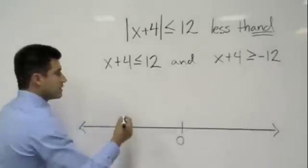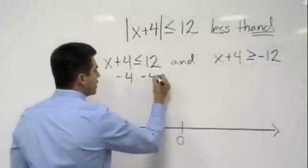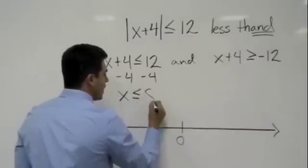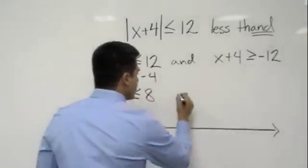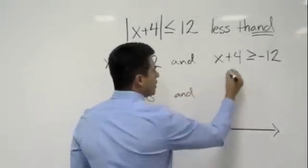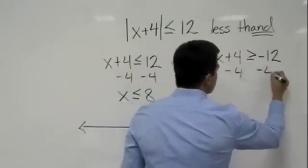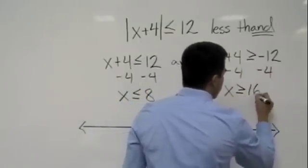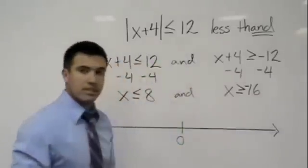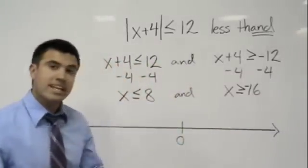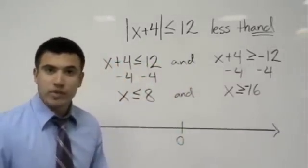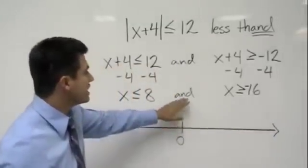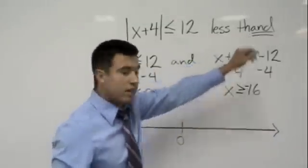Now let's solve for x. We subtract 4 from both sides: x is less than or equal to 8. And solving the other inequality, x is greater than or equal to negative 16. We got it right if we graph it and everything connects, because we said it's an 'and' right from the start.